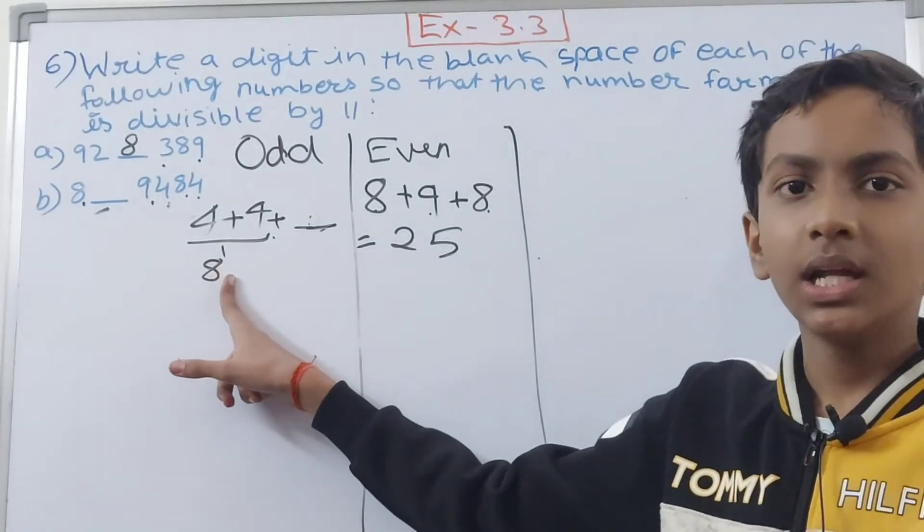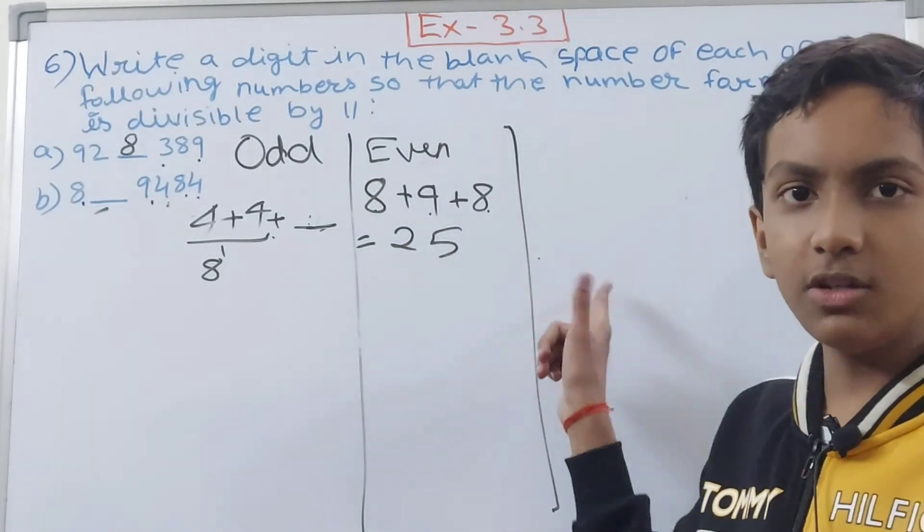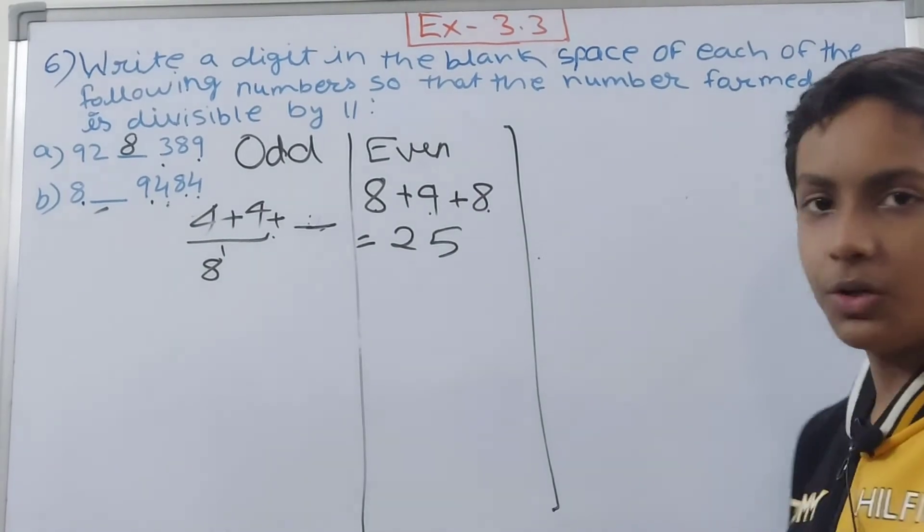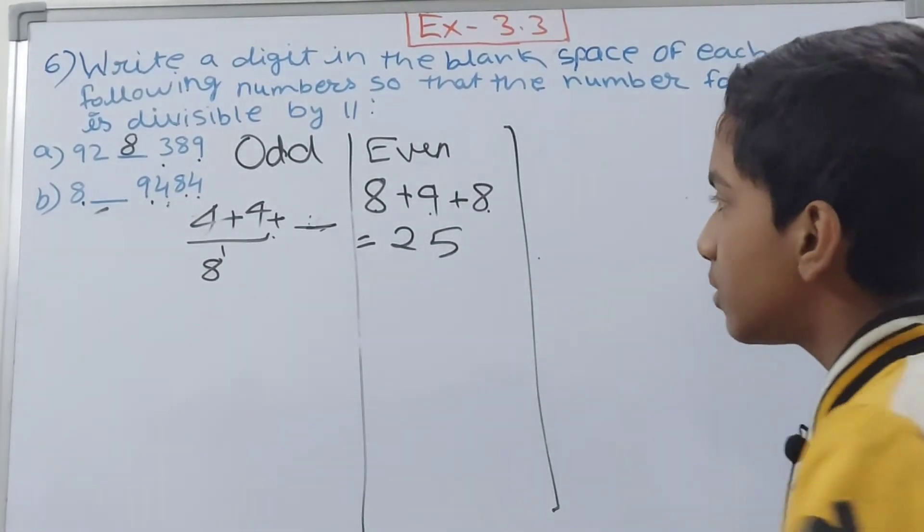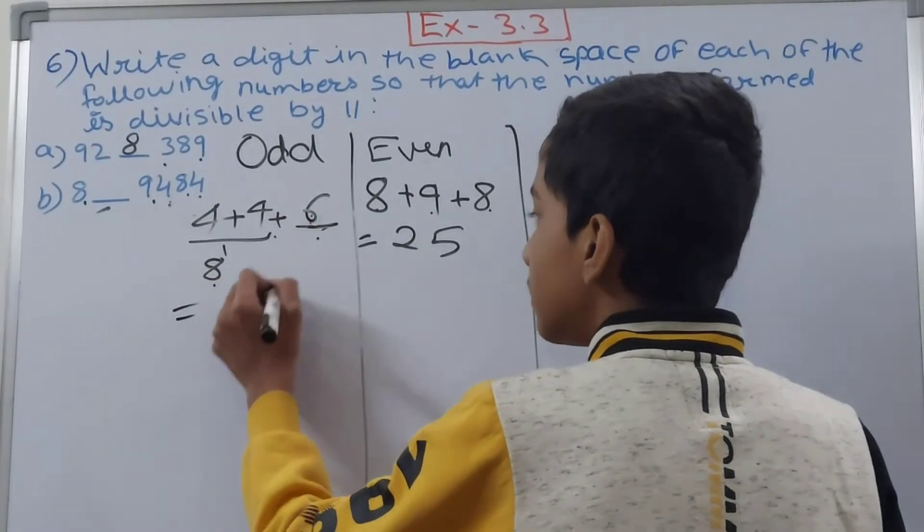Then you can subtract that 14 from 25, you will get 11 and you will get your answer. So what will you add to 8 to get 14? 6 right. So in the blank we will write 6. 8 plus 6 is 14.